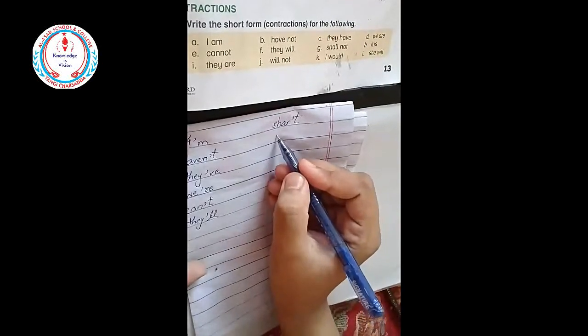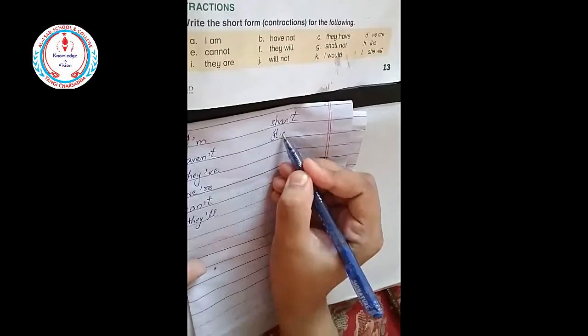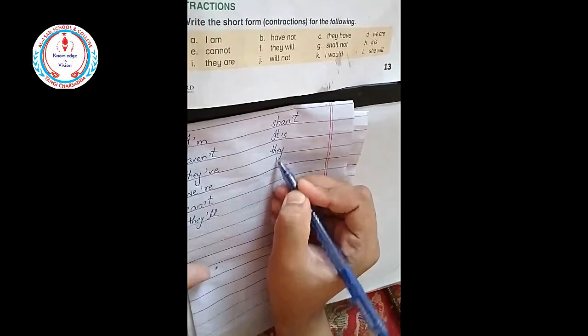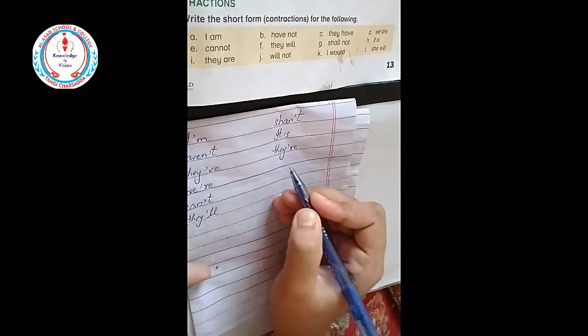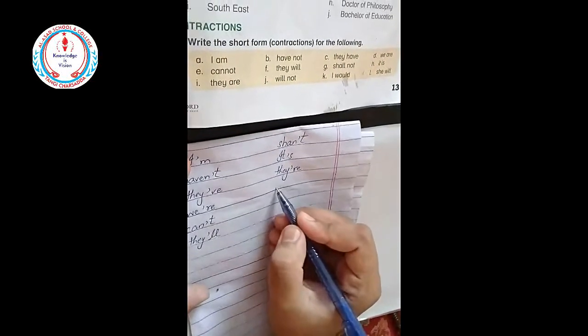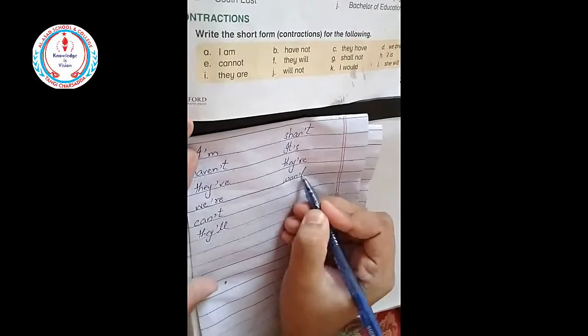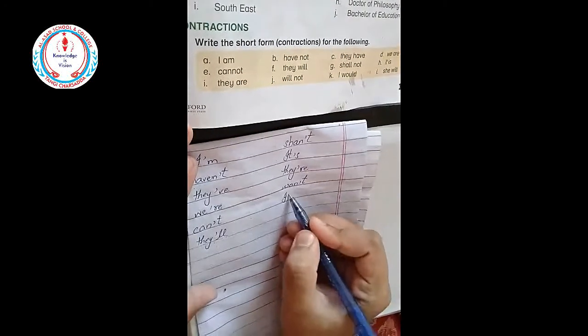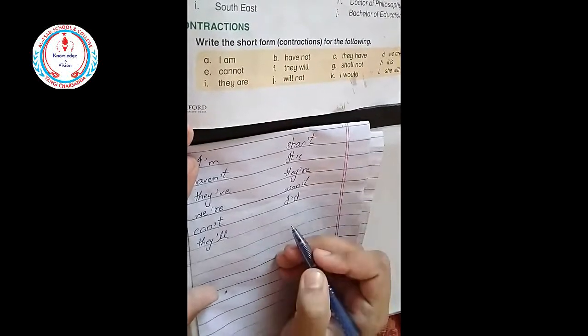Shall not: shan't. It is: it's. They are: they're. Will not: won't. I would: I'd. And she will: she'll.